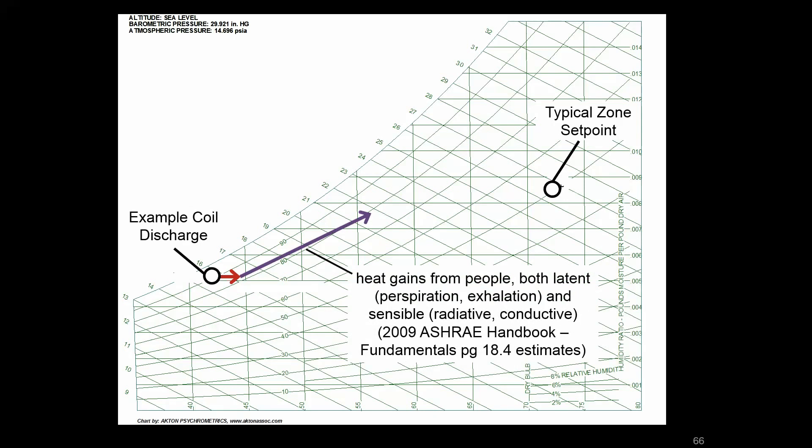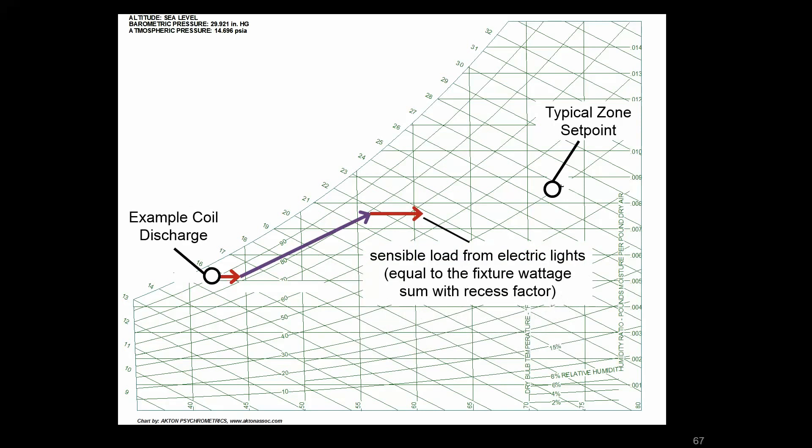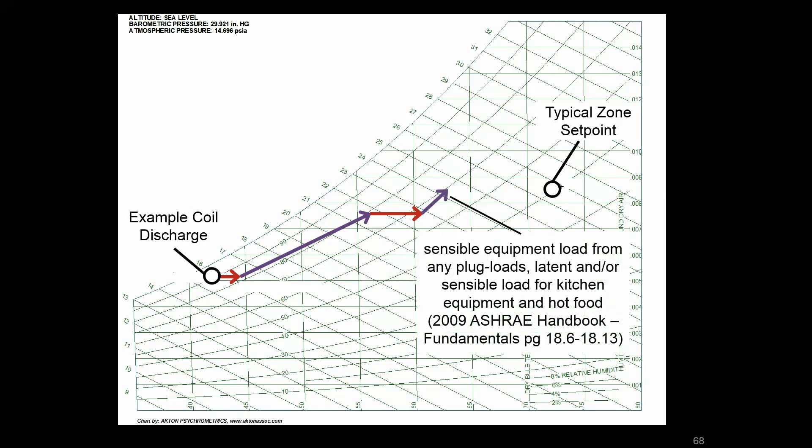Then you're in the space and now you're seeing the latent and sensible load from the people. After that there might be some electric lighting that has a certain amount of load depending on how efficient that lighting is. Some miscellaneous plug-in type loads: computers, printers, any type of food you have in the area. Say there's a break room at one end, that is adding some latent load.